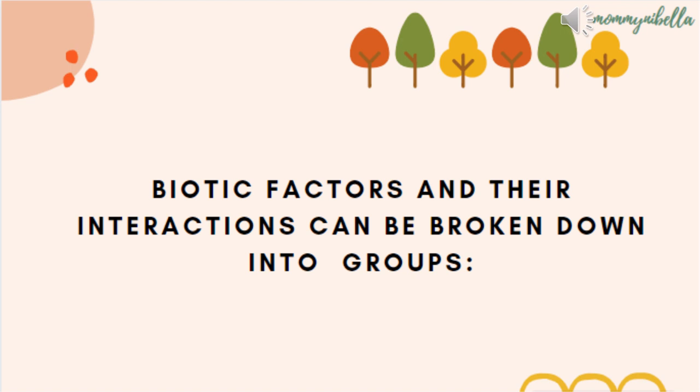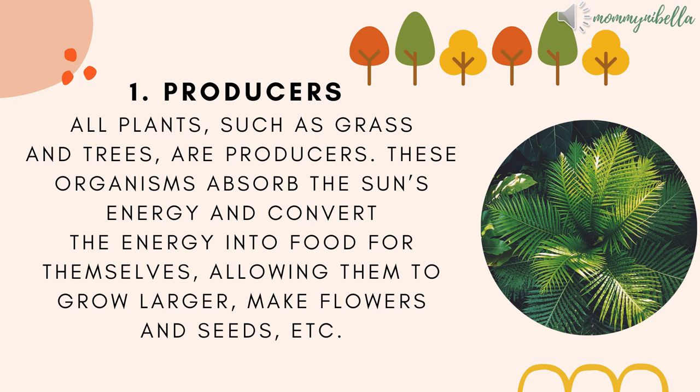Biotic factors and their interactions can be broken down into groups. The first one are the producers. All plants, such as grass and trees, are producers. These organisms absorb the sun's energy and convert the energy into food for themselves, allowing them to grow larger, make flowers and seeds.